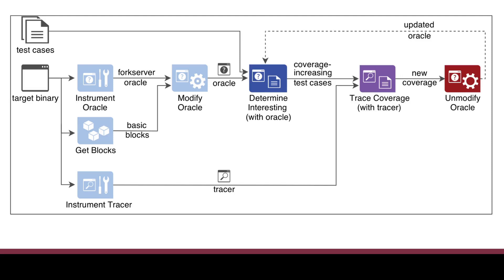Here's a diagram of the whole system. Starting with test cases and the target binary on the left, we create the Oracle and tracer binaries by getting the list of basic blocks from the target binary and placing a hex CC at the beginning of every basic block. During fuzzing, whenever we hit one of those breakpoint instructions, we bring in the slower tracer binary to trace the full coverage map. Then we use that to remove the breakpoints from the Oracle binary so those newly discovered regions don't trigger another exception.